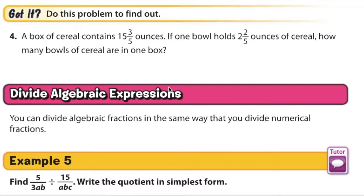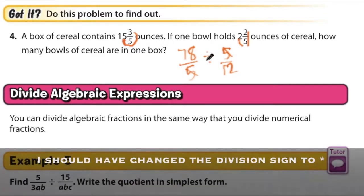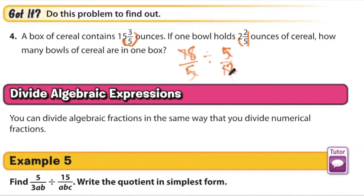For the got it problem, number 4, a cereal box contains 15 3⁄5 ounces, and one bowl holds 2 2⁄5 ounces. How many bowls of cereal are in one box? 15 3⁄5 gets changed to an improper fraction. 15 times 5 is 75. 75 plus 3 is 78. 78 over 5 divided by 2 times 5 is 10. 10 plus 2 is 12. 12 over 5. The reciprocal of that is 5 over 12. The 5s can cancel out. We can also reduce 78 and 12 by half. That's 6 and 39. 3 is a factor of both of those. 3 goes into 6 twice, and 3 goes into 39 13 times. 13 times 1 is 13 over 2, which is 6 and 1⁄2. So about 6 and 1⁄2 bowls of cereal are in one box.